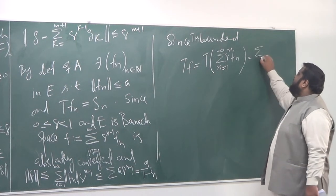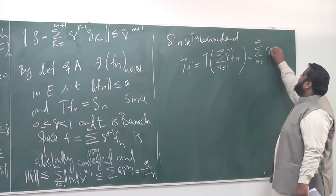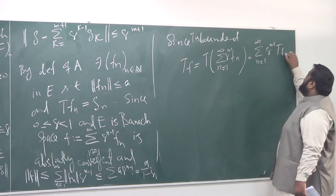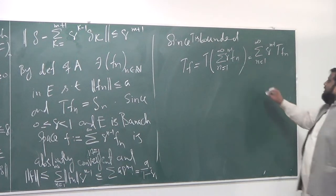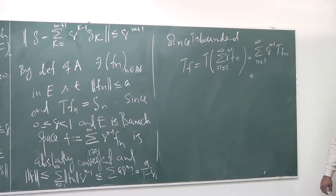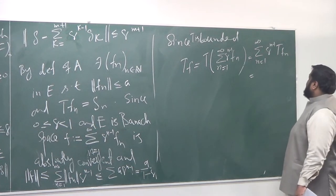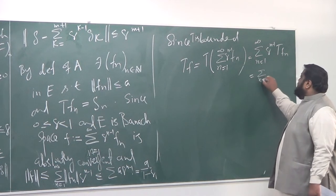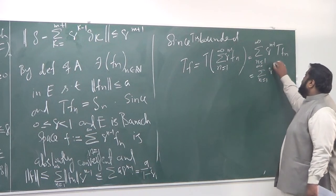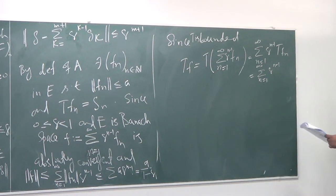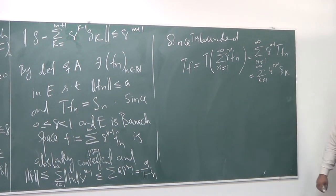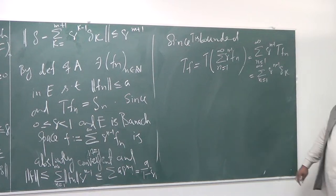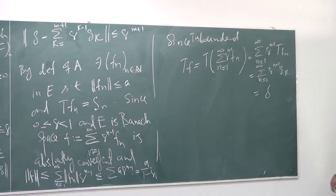So this is what we want: the sum from n equals 1 to infinity of Q raised to n minus 1 times Tf. Using linearity as well, this becomes the sum from n equals 1 to infinity of Q raised to n minus 1 times Gk. And this equals G — because that's what we proved, that this series converges to G.